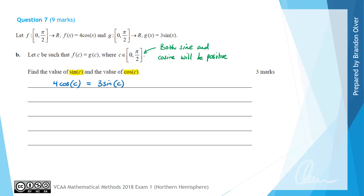Whenever we have a trigonometric equation with both cosine and sine present, we can divide by cosine. Dividing by cosine will give us the tan ratio, because sine divided by cosine is tan. So therefore we have 4 = 3tan(C). Dividing both sides by 3, we find that tan(C) = 4/3.